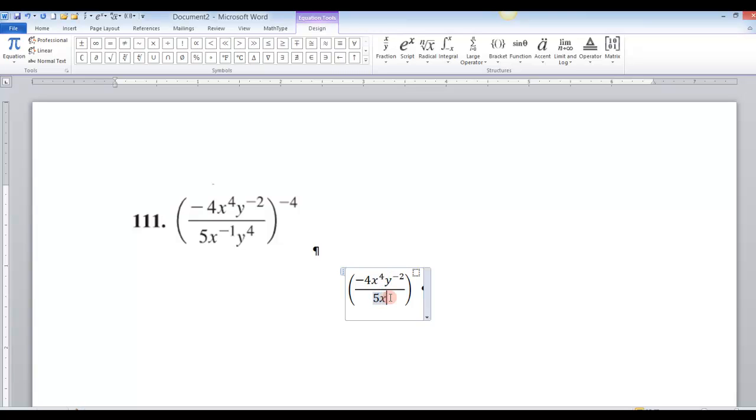Then in the denominator, 5x, up arrow negative 1, space, and y, up arrow 4, space. So then I've got that in here, I can go ahead and put this exponent right there, negative 4. And there I've made an exact replication of that.